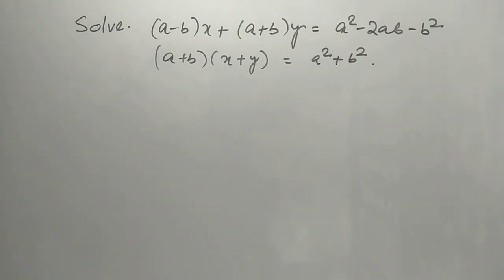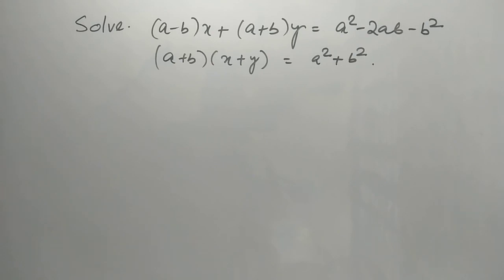Solve: (a minus b) x plus (a plus b) y is equal to a squared minus 2ab minus b squared, and (a plus b) into (x plus y) is equal to a squared plus b squared.